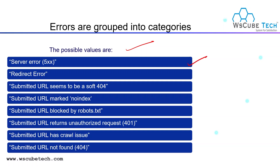Some types of errors you can encounter: First is server error 5xx. Next, you have redirect errors — issues regarding redirecting where your page is not redirected properly. Submitted URL seems to be a soft 404 error. Submitted URL marked no-index — your page is mentioned with a no-index directive. Submitted URL blocked by robots.txt. Submitted URL returned unauthorized request — that is your 401 error. Submitted URL has crawl issue. Submitted URL not found — 404.